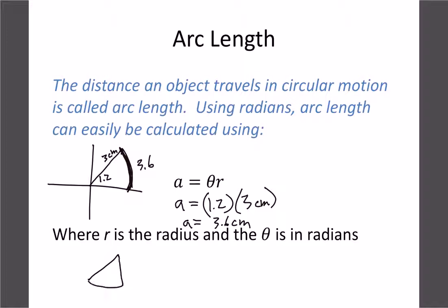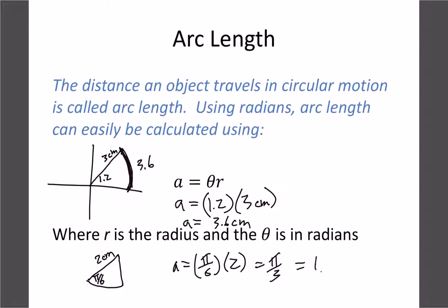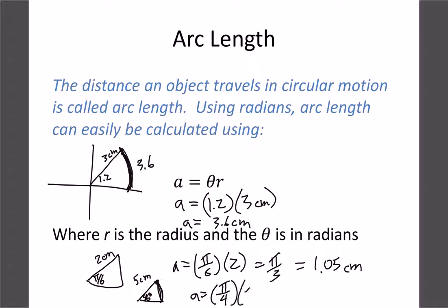If the angle is given as a fraction in radians — say π/6 with a radius of 2 centimeters — multiply to get π/6 × 2 = π/3, or approximately 1.05 centimeters. If the angle is in degrees, convert first: 45 degrees becomes π/4, then multiply by the radius of 5 centimeters to get 5π/4.